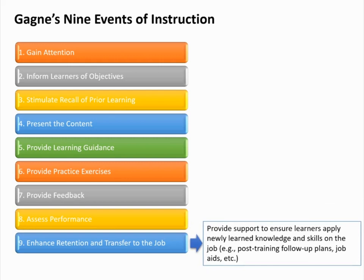Event 9 — Enhance Retention and Transfer to the Job: In this last stage, learners show that they've retained information by transferring their new knowledge or skill to situations that are different from the ones you've trained them on. Creating electronic or online job aids, references, templates, and wizards are ways of aiding performance.